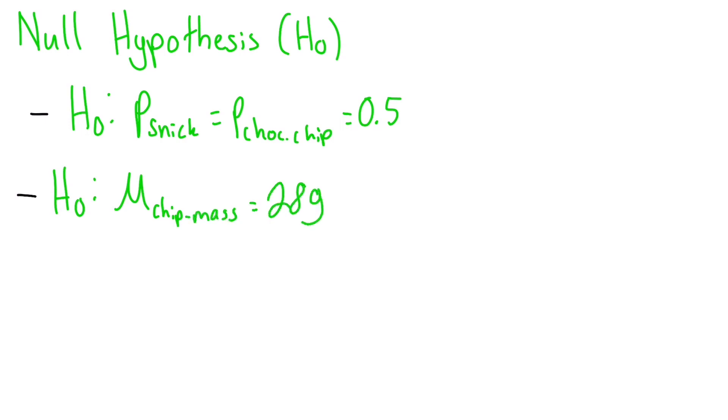This is what we are assuming to be true and trying to prove otherwise with our statistical test. Usually, we have an alternative hypothesis as well, which can be our alternative claim.